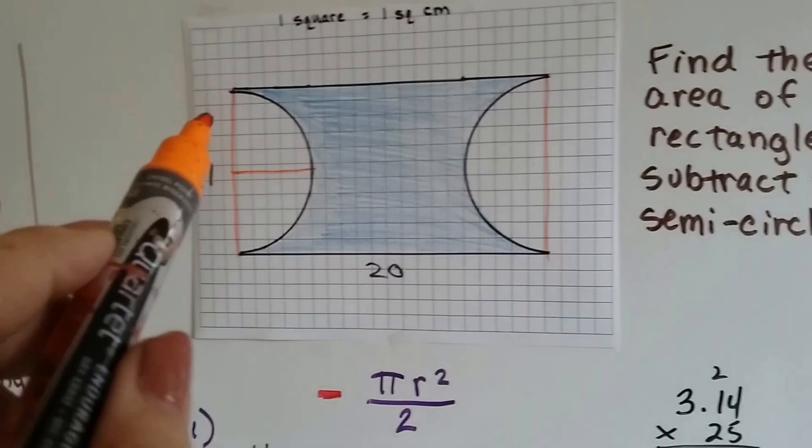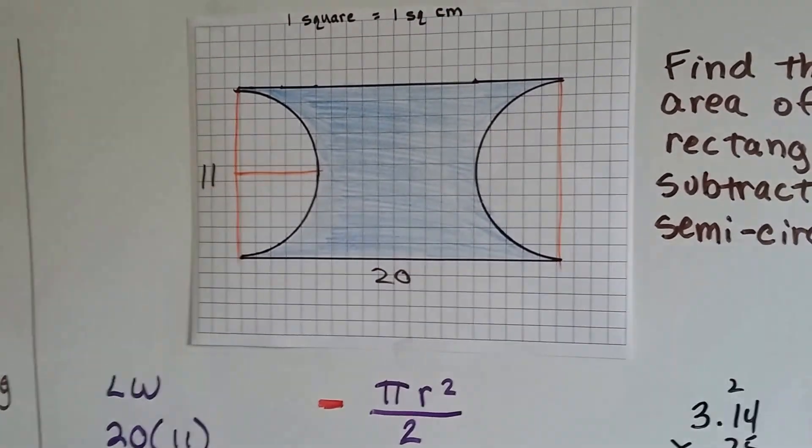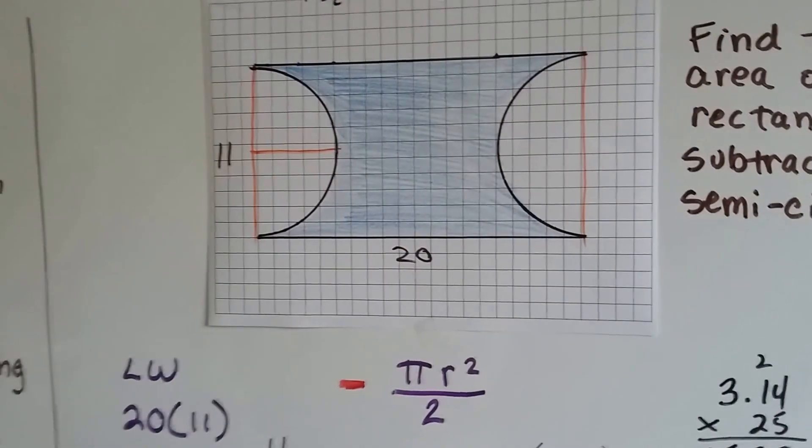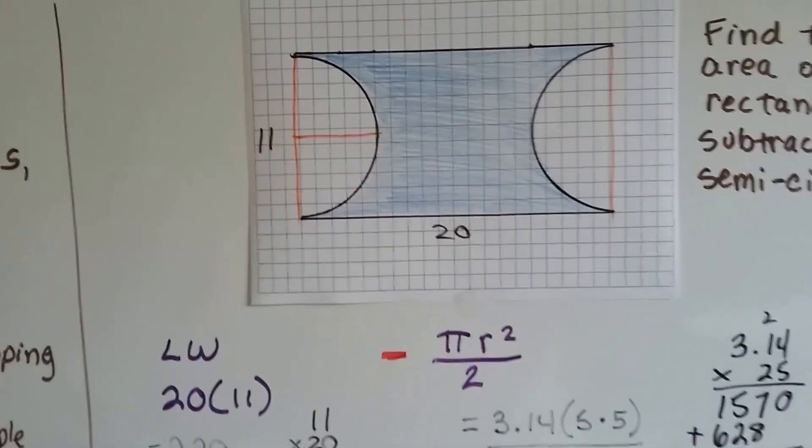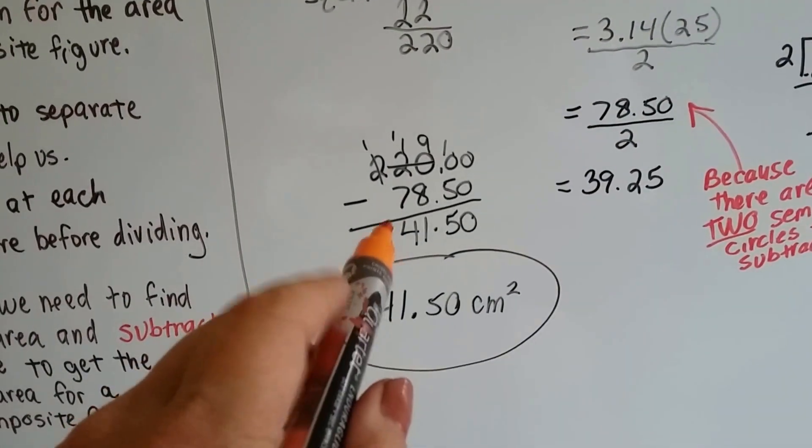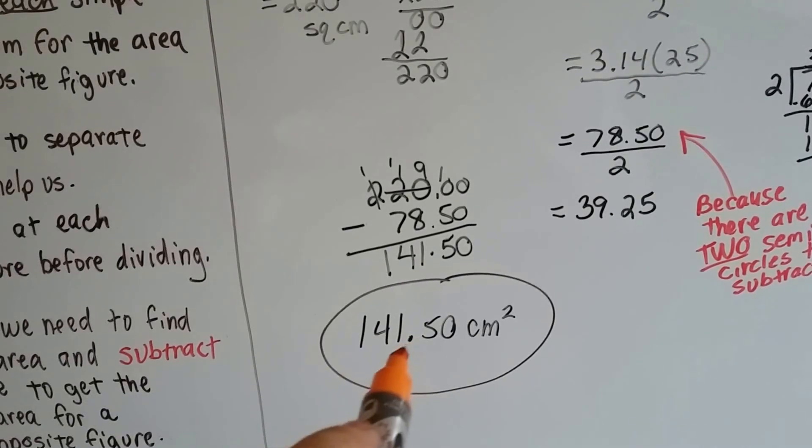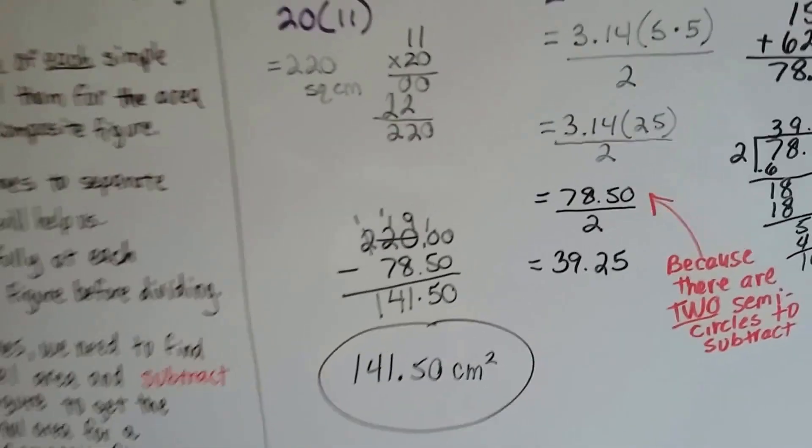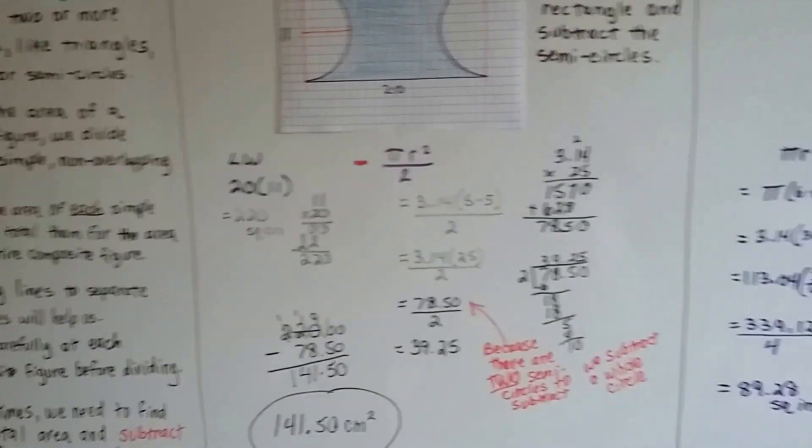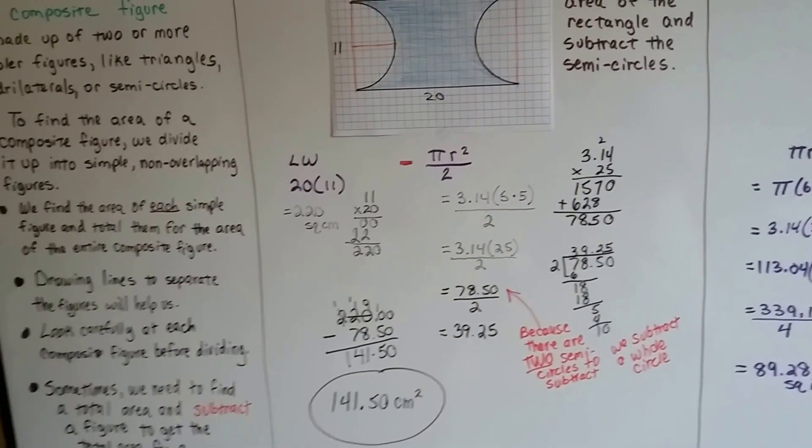That semicircle would be 39.25 and that semicircle would be 39.25, but together they make a whole circle. So let's subtract an entire circle from this rectangle. That's the 78.5 and we subtract it from the 220 from the rectangle and we get 141.50 centimeters squared. That is the total area for this weird shape that's missing two semicircles.